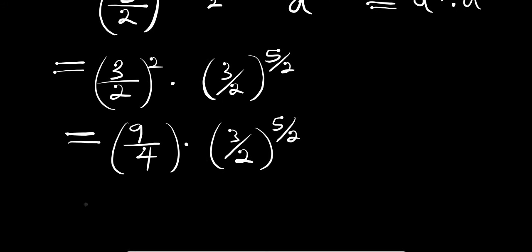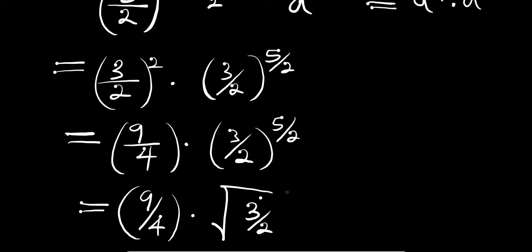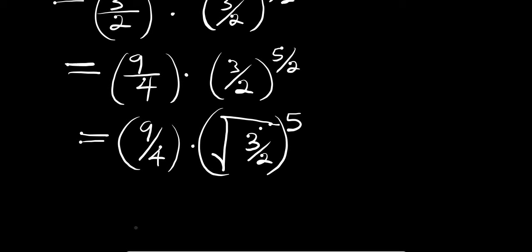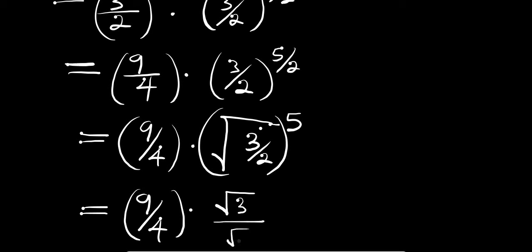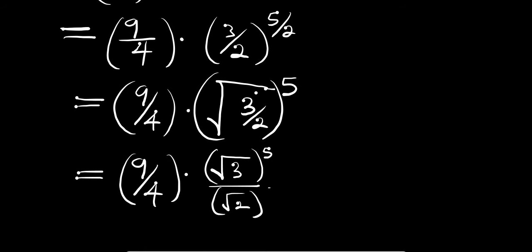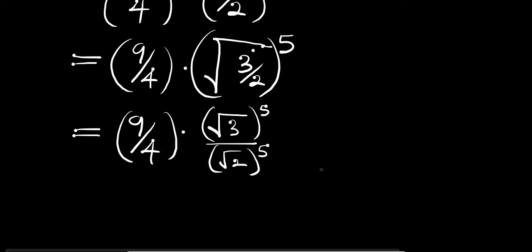So what next can we do? We can have it as 9 divided by 4, times — we can eliminate the 1 over 2 exponent by taking the square root of 3 over 2 all to the power of 5. So this can also give us 9 divided by 4 times the square root of 3 divided by the square root of 2, where the square root of 3 is raised to the power of 5 and the square root of 2 is also raised to the power of 5. So we need to find the value of root of 3 to the power of 5 and the value of root of 2 to the power of 5.